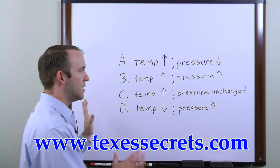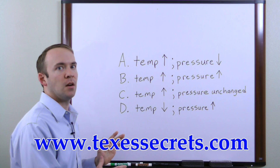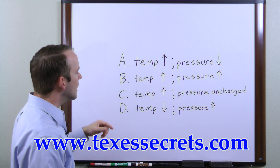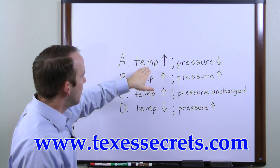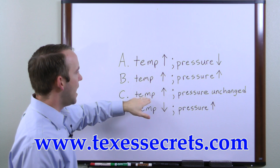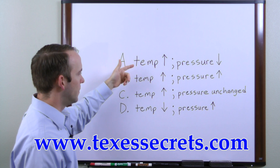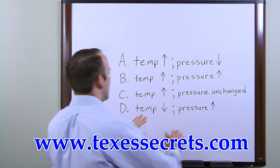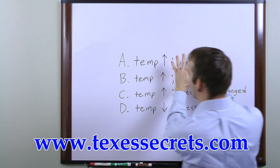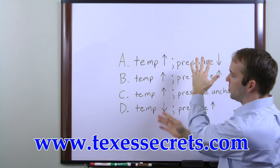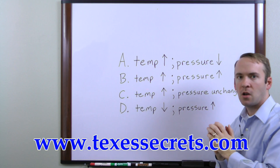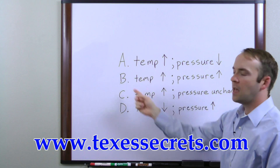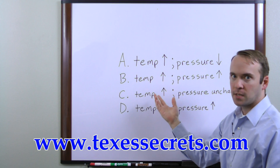Let me show you another way, again just focused on the answer choices, where you can come to the same answer. If we look at these, three of the answer choices have temperature going up and one of them has temperature going down. So if we only consider temperature, we would say that odds are the correct answer choice is probably one of those that has temperature on the increase.